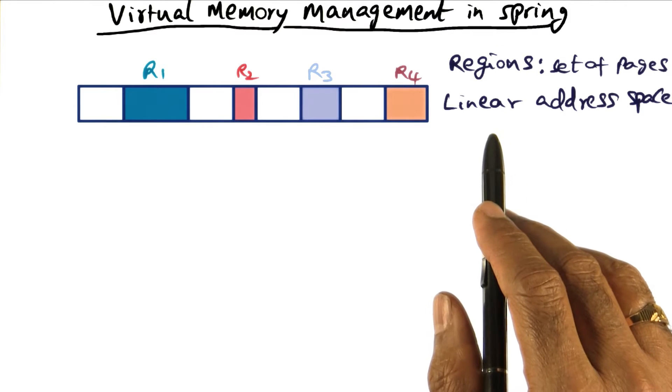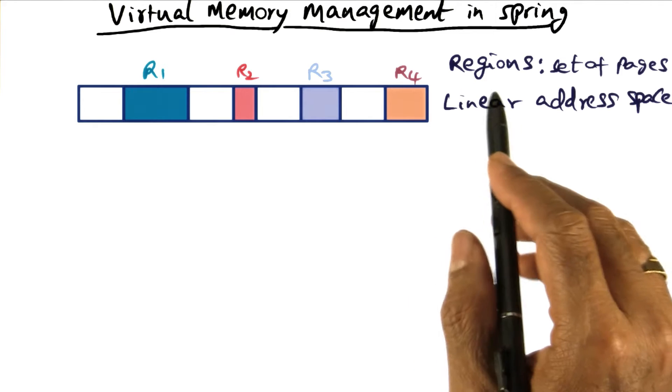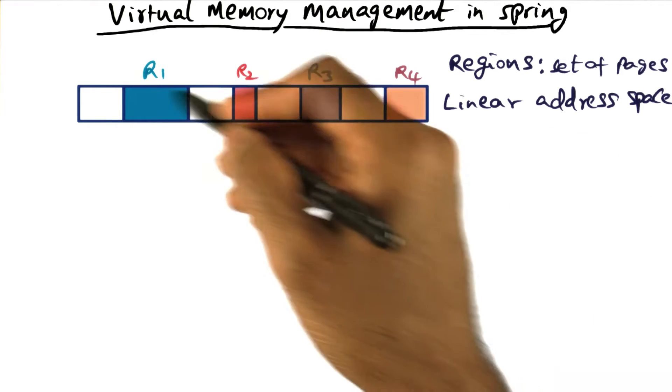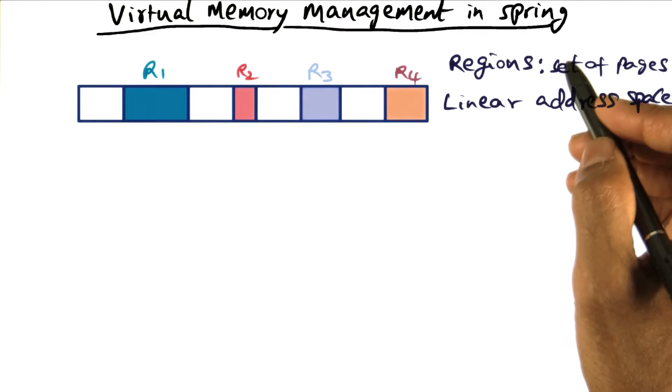As we know, the linear address space of a process is what the architecture gives you, and what the virtual memory manager does is to break this linear address space into regions. You can think of regions as a set of pages.